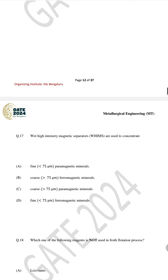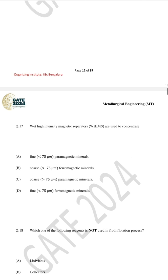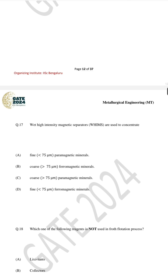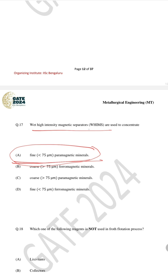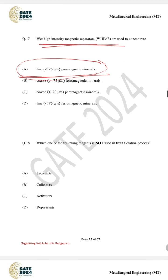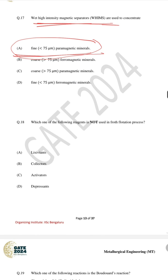For question number 17, regarding ferromagnetic material, the correct answer is A — this is used for fine paramagnetic minerals in high intensity magnetic separation. For question number 18, which one of the following reagent is not used in froth flotation, the correct answer is A. For question number 19, which one of the following reaction is a Boudouard reaction, the correct answer is C.